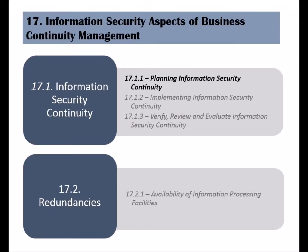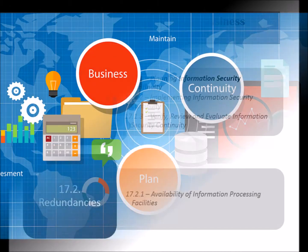The thirteenth clause of the ISO 27002 standard is called Information Security Aspects of Business Continuity Management. It has two categories, of which the first is called Information Security Continuity. This category has three controls, and its objective is to ensure that Information Security Continuity is a part of the general business continuity system.